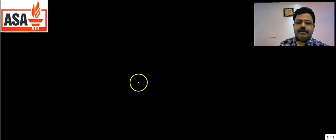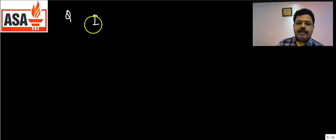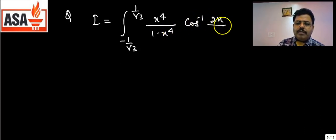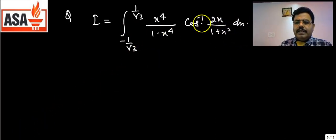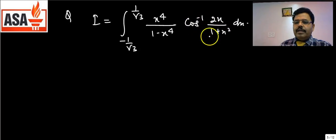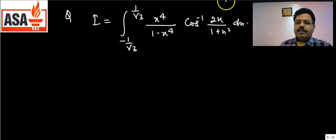The next question is: I = ∫ from −1/√3 to 1/√3 of [x⁴/(1−x⁴)] · cos⁻¹(2x/(1+x²)) dx. Since the limits are −a to a, we first check whether the integrand is odd or even, but it is not immediately clear.